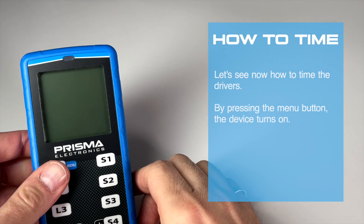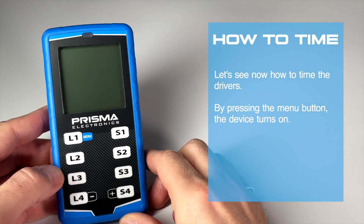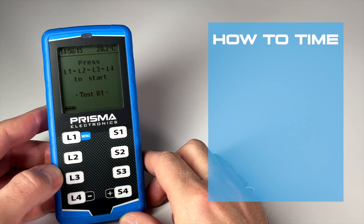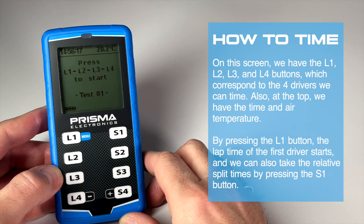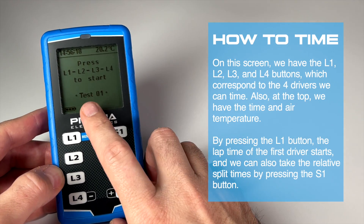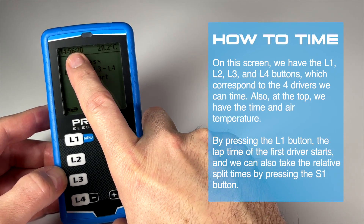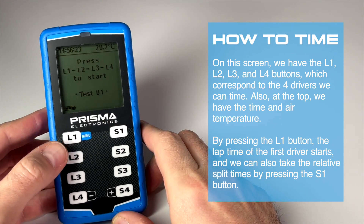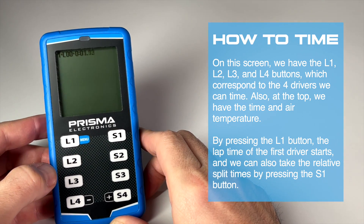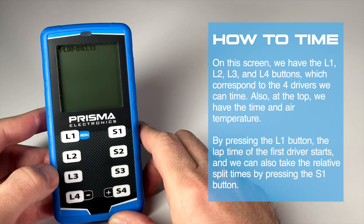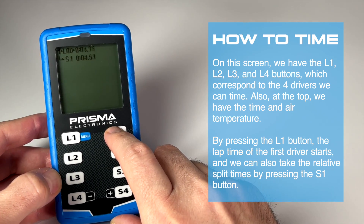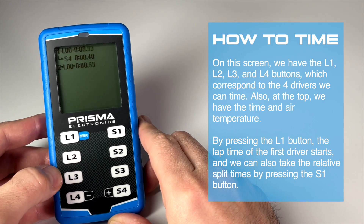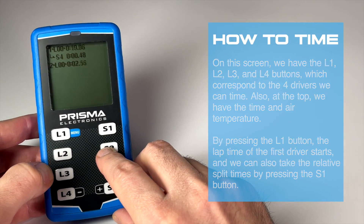Let's see now how to time the drivers. By pressing the menu button, the device turns on. On this screen, we have the L1, L2, L3, and L4 buttons, which correspond to the four drivers we can time. At the top, we have the time and air temperature. By pressing the L1 button, the lap time of the first driver starts, and we can also take the relative split times by pressing the S1 button.